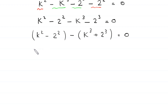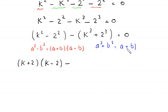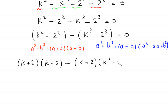Now we have a difference of two squares, so we use the algebraic identity a squared minus b squared is equal to a plus b times a minus b. So this will become k plus 2 times k minus 2. Minus, we have a sum of two cubes, so we use the algebraic identity a cubed plus b cubed is equal to a plus b times a squared minus ab plus b squared. This k cubed plus 2 cubed will become k plus 2 times k squared minus 2 times k plus 2 squared, or 4, is equal to zero. And you can see that k plus 2 is a common factor.